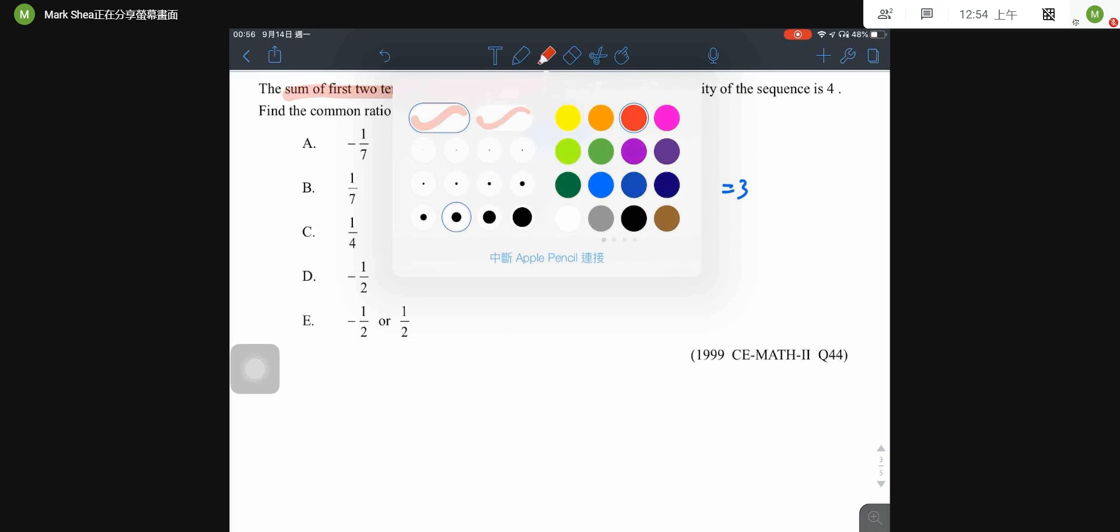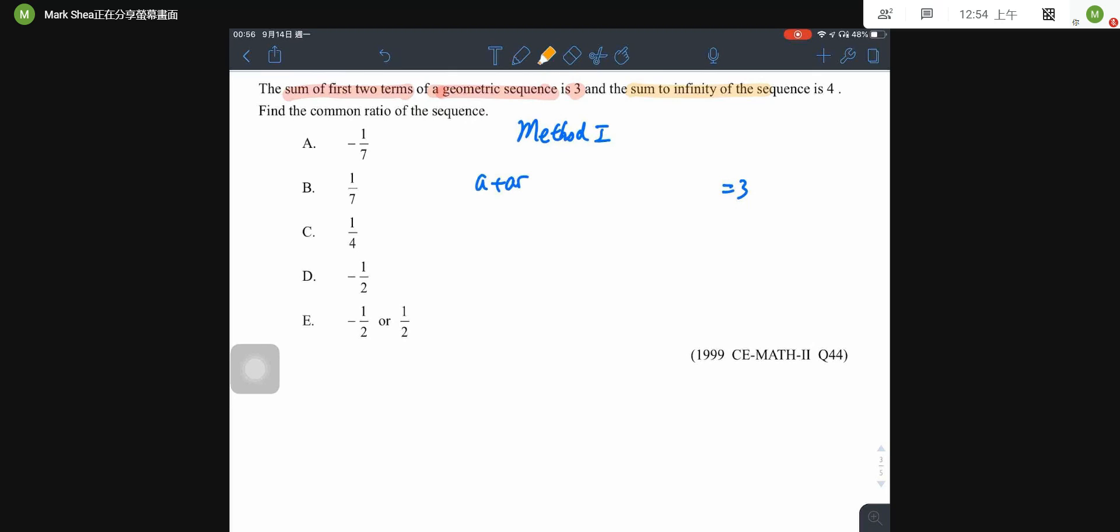Second, the sum to infinity is 4. So I have a plus ar, ar squared, ar to the power of 4, and so on, it is equal to 4.